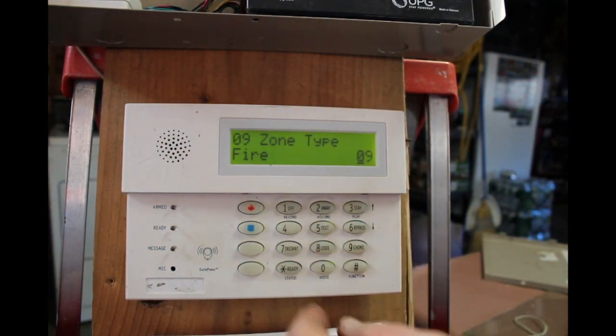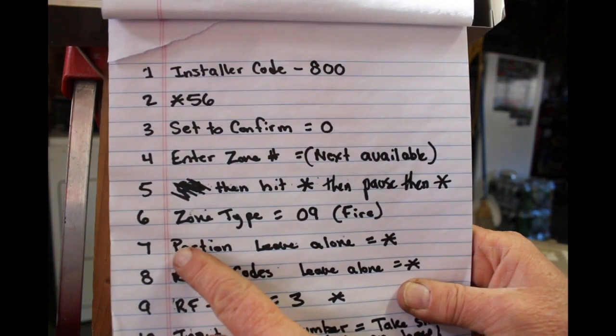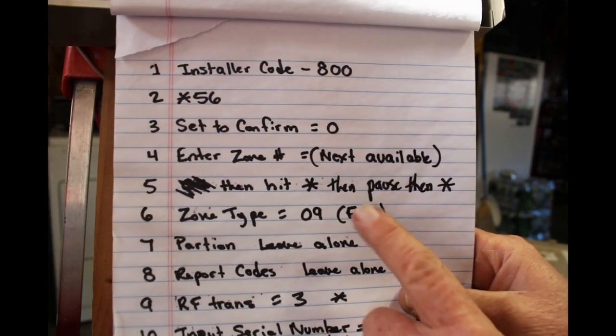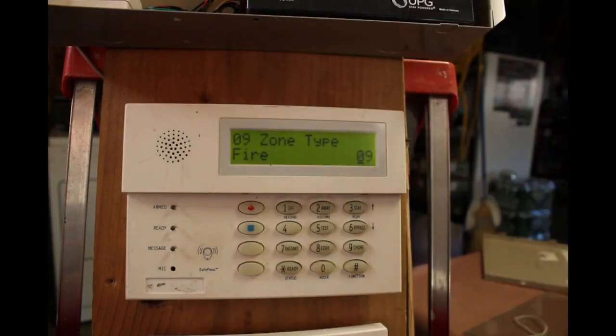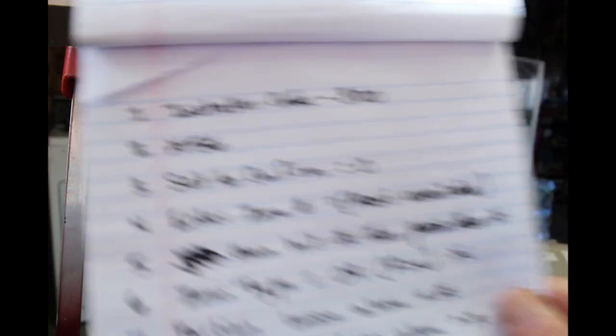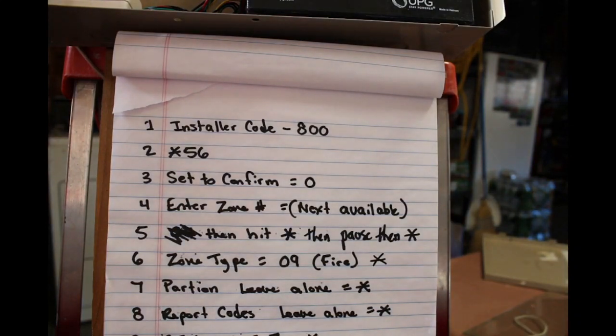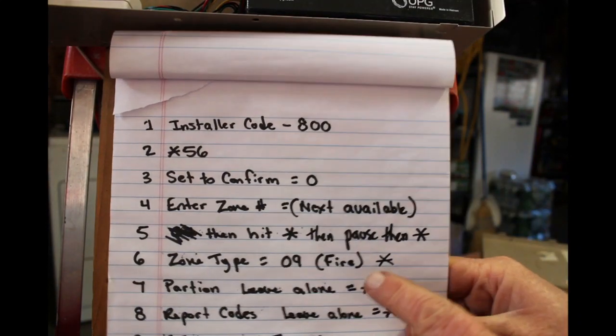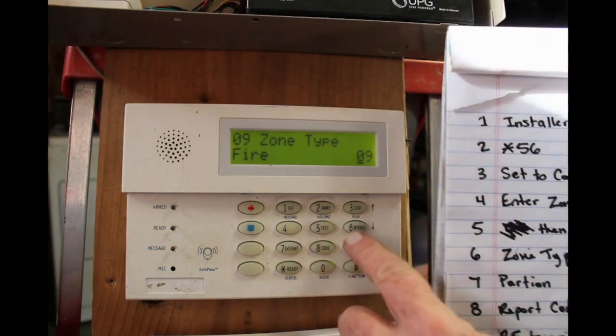All right, says fire. All right, and after you do that, I'm sorry, you hit star. Let me get that at the next frame there. So number six on your list at the end of it, hit, make a star. Okay, so I hit 09 and that's fire, and then hit star.